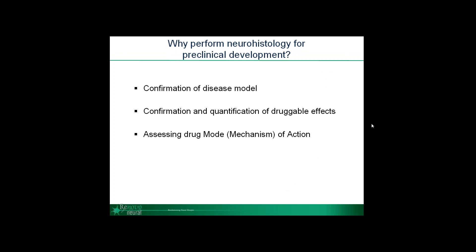First, what's happening in the disease model? If you're observing behavioral changes or increased survival, you may already know the main mechanism of your model, but with histology you can zoom in and look to see if some areas are more susceptible to disease than others. The second and third points go hand in hand when looking for data to include in an IND application: is my drug having a significant therapeutic impact on disease, and what is the mechanism of action of a drug under physiological conditions?